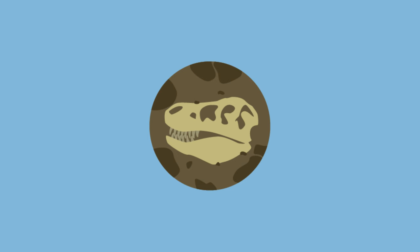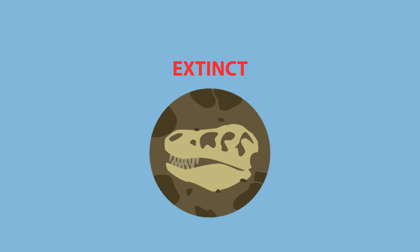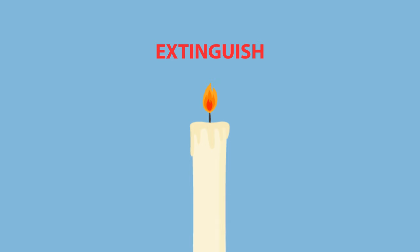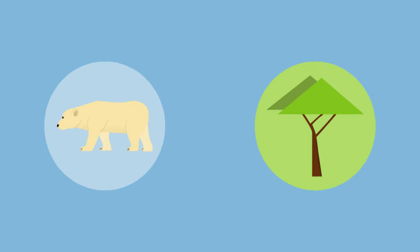What is extinction and how does a species become extinct? To extinguish something means to stop it from existing, like blowing out a candle flame. When a plant or animal species that once lived stops existing entirely, we say that that species has become extinct.